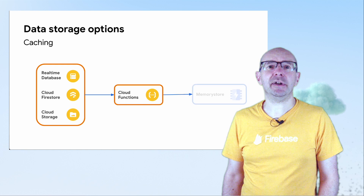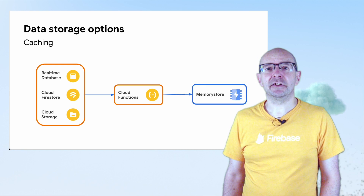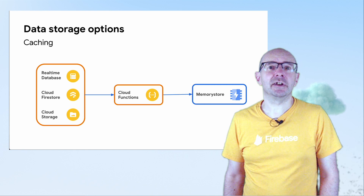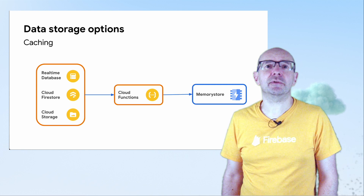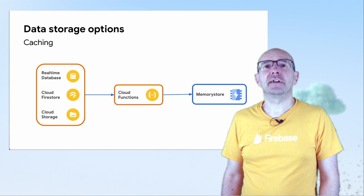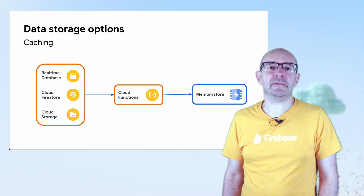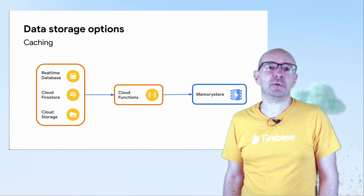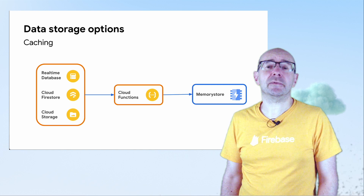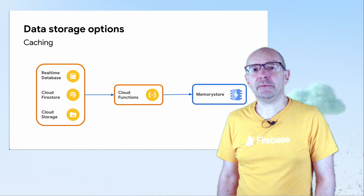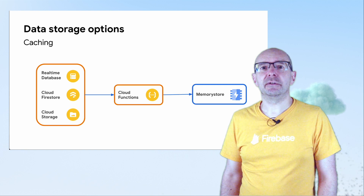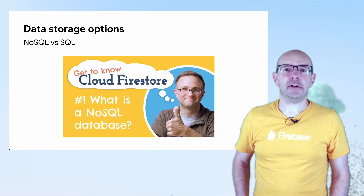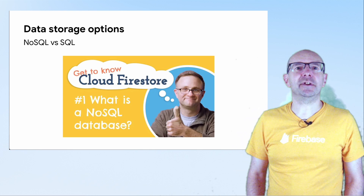If you have functions which have to read the same documents repeatedly and quickly, something like MemoryStore — a GCP managed version of Redis — can cache data for use within your Cloud Functions. Make sure that you first look at the fixed cost of running a MemoryStore instance versus the variable cost of fetching documents from Cloud Firestore. If you're fetching a lot of documents, MemoryStore may be for you.